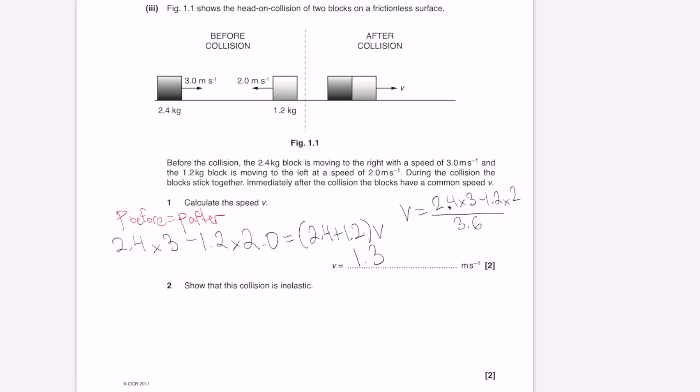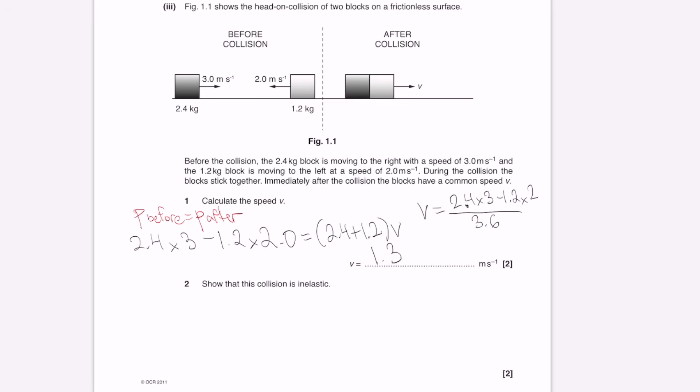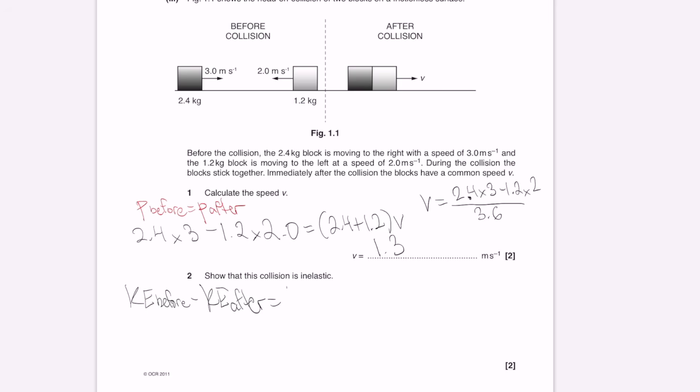Show that this collision is inelastic. What we need to do is look at the kinetic energy before the collision, and then see if some of it has been lost by taking away the kinetic energy after the collision. The total kinetic energy before is going to be a half M, which is 2.4, times 3 squared. And then beforehand, we also had this object with kinetic energy. Remember, kinetic energy does not have a sign. So this will be a half times 1.2 times 2 squared, take away a half times 3.6, multiply this by 1.33 squared, which is the kinetic energy afterwards. This answer is clearly not zero, it's approximately 10.158. So the kinetic energy before is not equal to the kinetic energy after. Hence, the collision is inelastic.